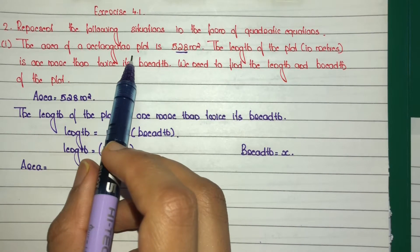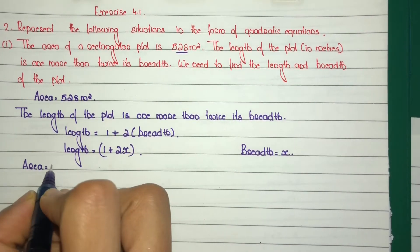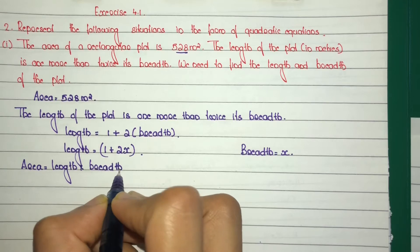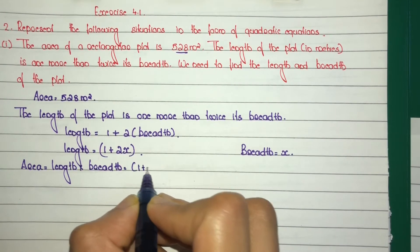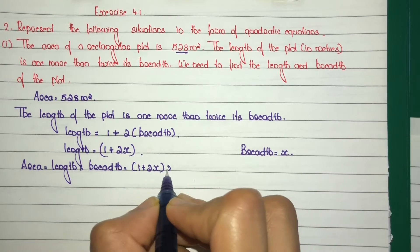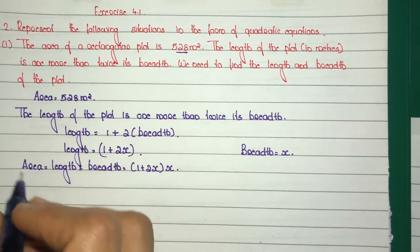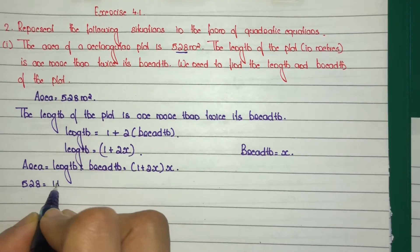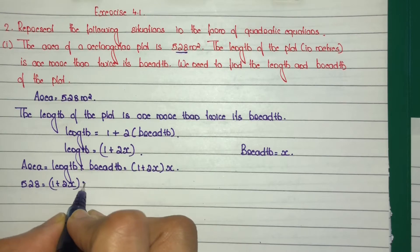It is a rectangular plot, and we know that the area of a rectangle is equal to length into breadth. Substituting: length equals 1 plus 2x, breadth equals x, and area equals 528. So 528 is equal to (1 plus 2x) into x.